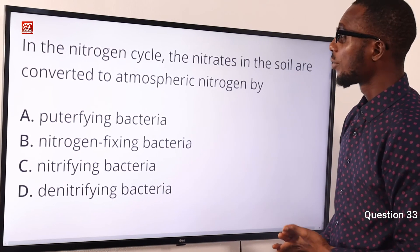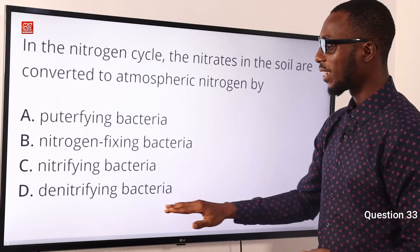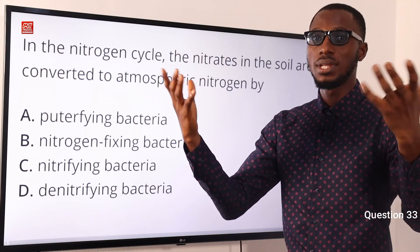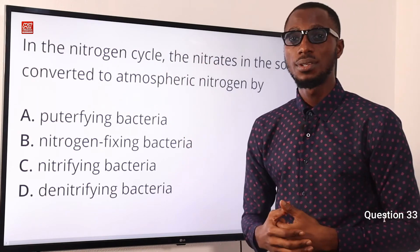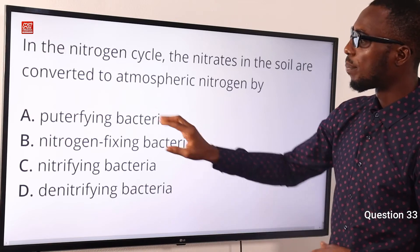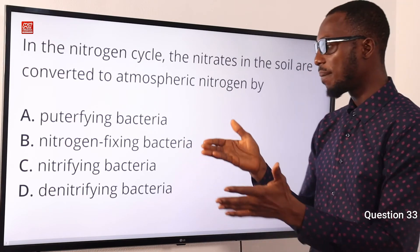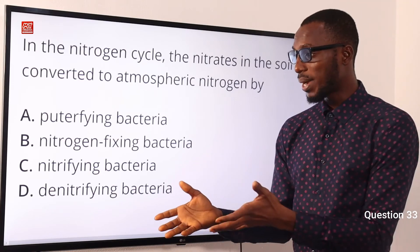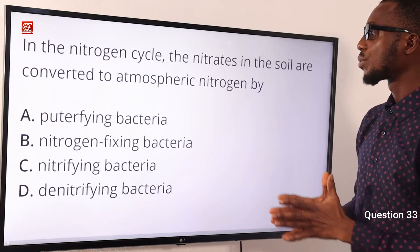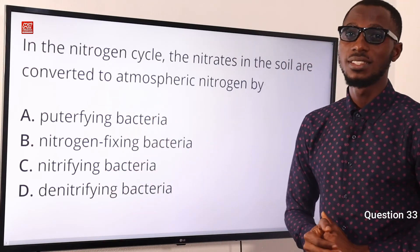Number 33. On the nitrogen cycle, the nitrates in the soil are converted to atmospheric nitrogen by what? By denitrifying bacteria. They convert nitrate to gaseous nitrogen that escapes to the atmosphere, which reduces the amount of nitrogen content available in the soil. Putrefying bacteria and some fungi are responsible for decay. Nitrogen-fixing bacteria, from the name, fix nitrogen. The correct option in response to the question is option D — denitrifying bacteria.